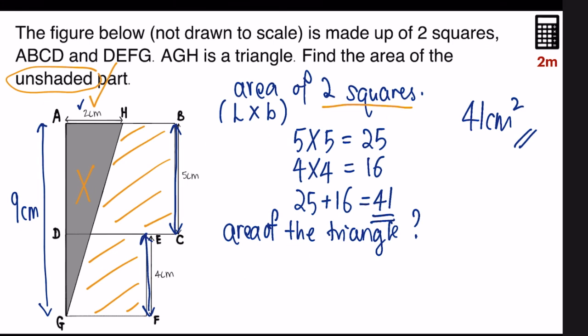So the formula to find area of a triangle is half times base times height. In this case, the base is two centimeters, so half times two times nine, and I'll get nine square centimeters.